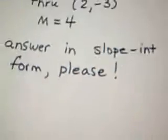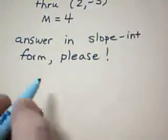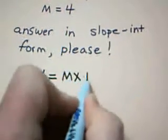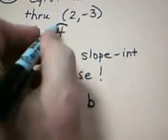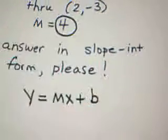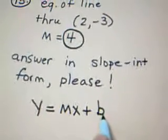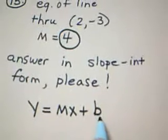Now remember, what we're looking for is our answer to be in the form y equals mx plus b. So far in this problem, they've given us the slope, which is m, but they have not given us the y-intercept, which is b.